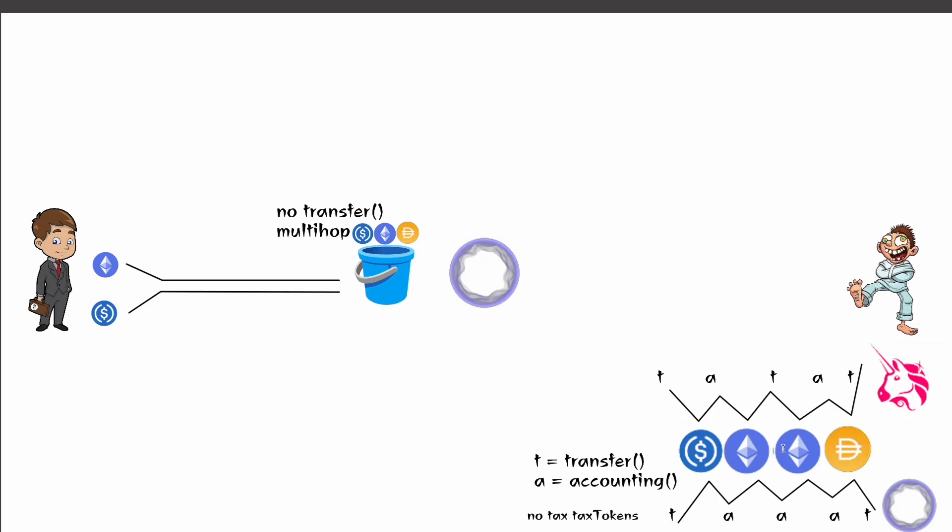Okay. So in this case, if ETH happened to be a tax token here, then because they're not calling the transfer function, then that tax token doesn't actually get taxed. Okay. So that's another kind of simple benefit of this single pool type thing.